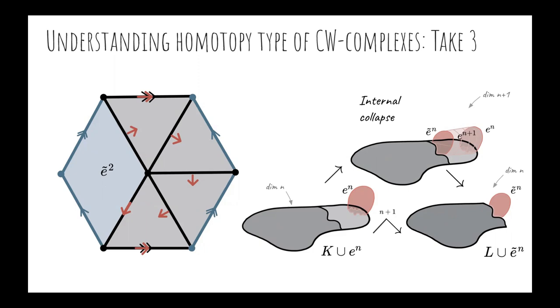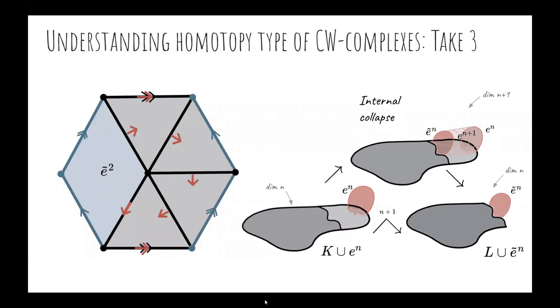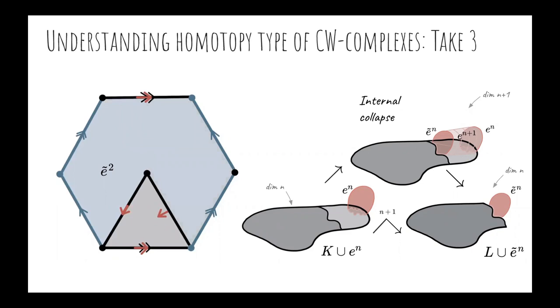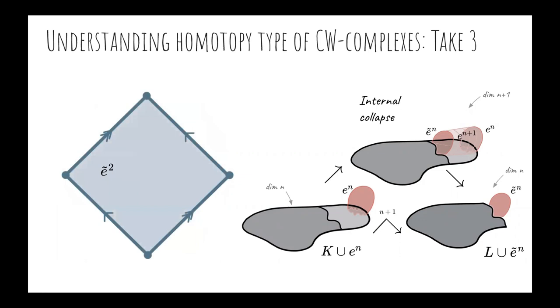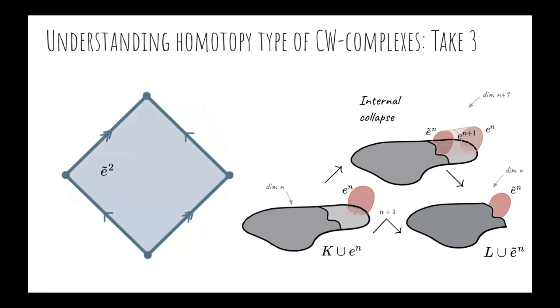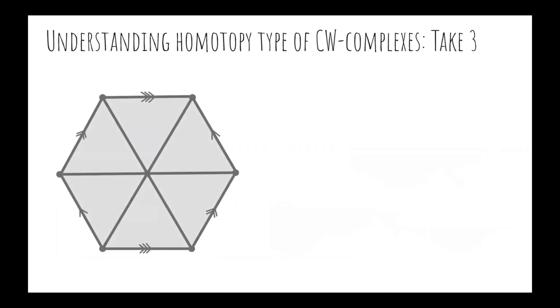So we iterate this procedure in our original complex and we end up with a complex with one cell for every non-internally collapsed cell, or equivalent for every critical cell. In the end, we could reconstruct the attaching map of each cell. To sum up, we have proved that this complex pre-deforms to this new reduced complex, which is a torus.